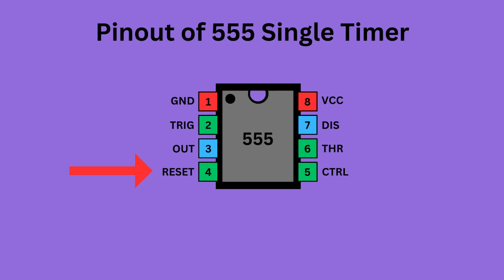Pin four, the reset pin, is used to reset the 555 timer's internal flip-flop. Pin five serves as the control pin, enabling you to adjust the threshold voltage levels used by the internal comparators to set and reset the flip-flop.